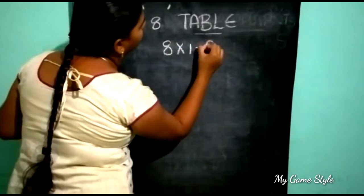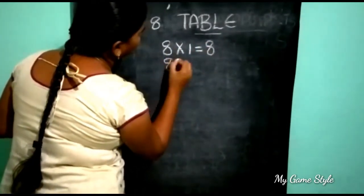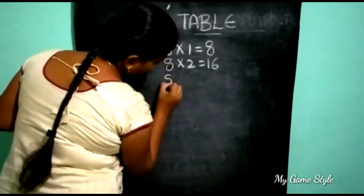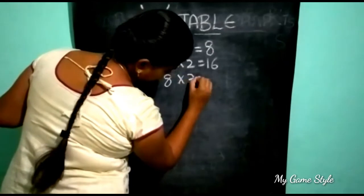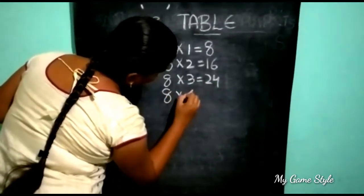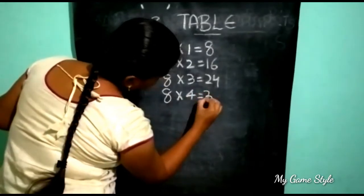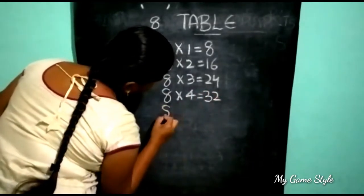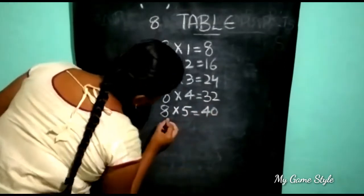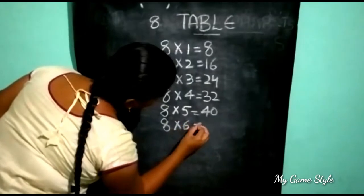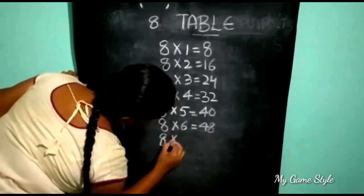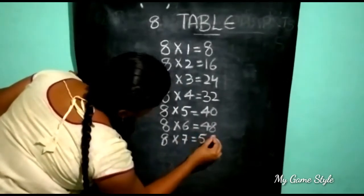Eight ones are eight. Eight twos are sixteen. Eight threes are twenty-four. Eight fours are thirty-two. Eight fives are forty.